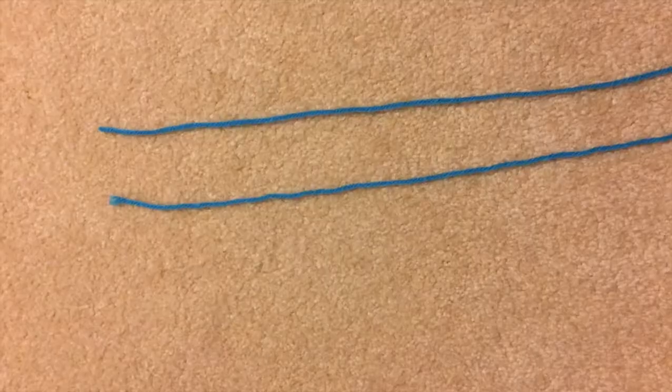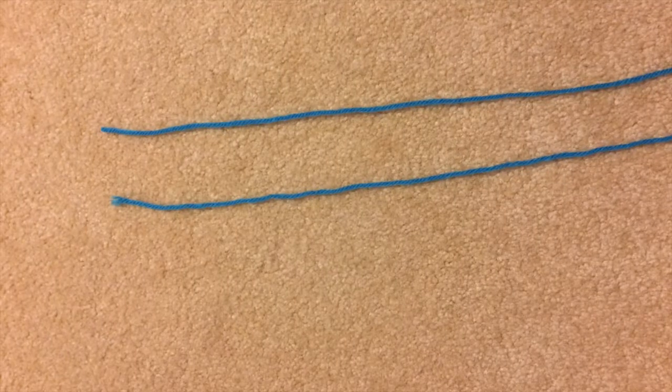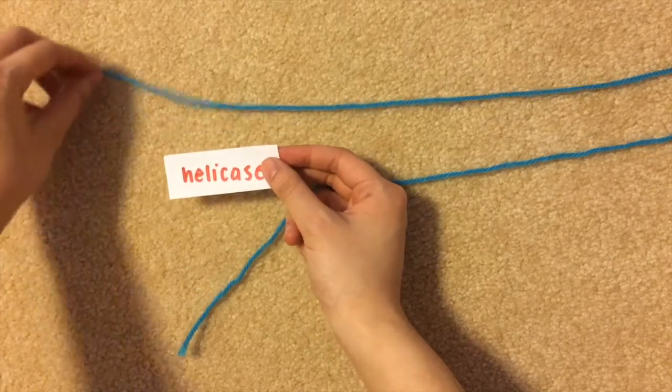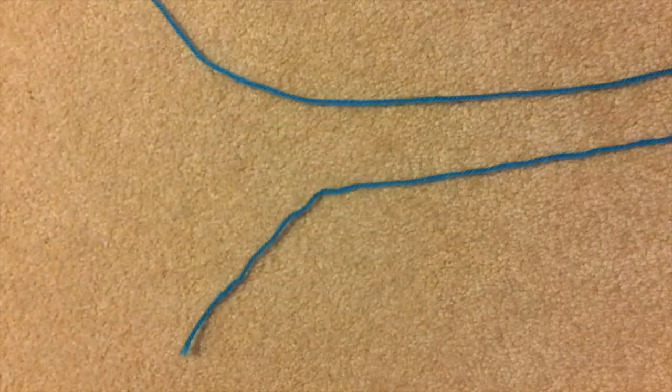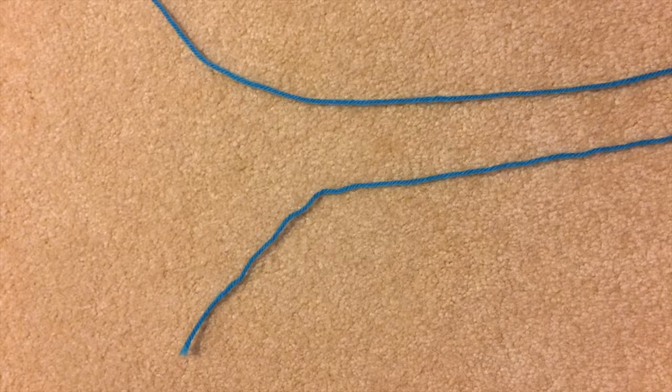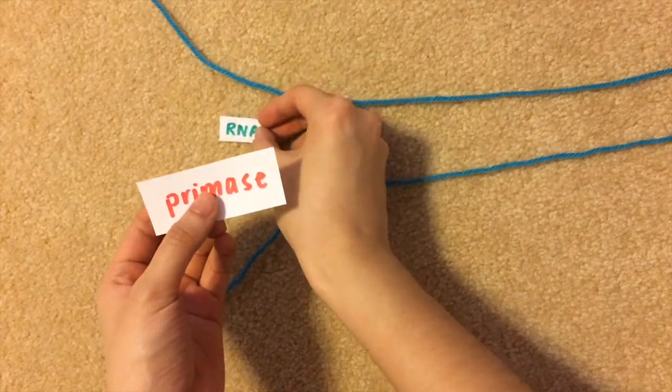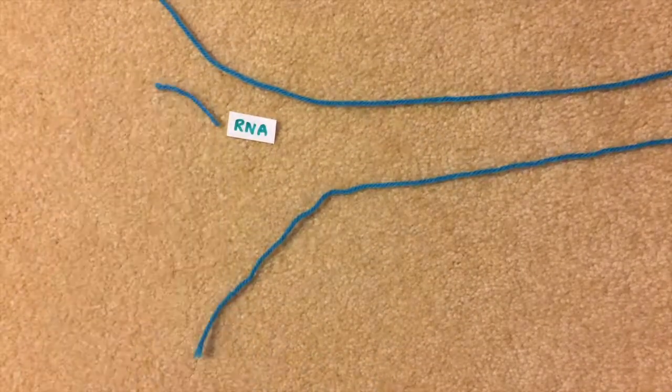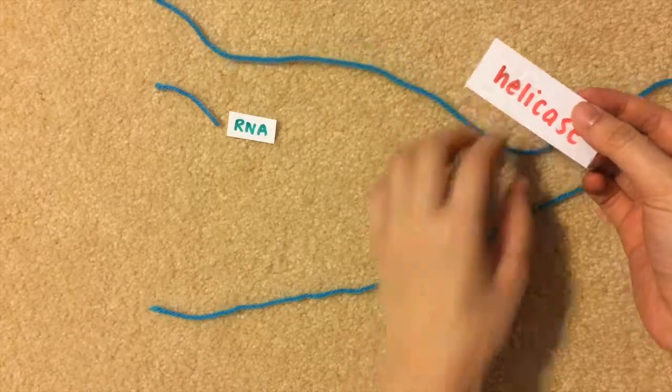The reason why the lagging strand is slower than the leading one is because the DNA polymerase can only work starting where the DNA has been unzipped by helicase. So try to visualize this process. Helicase opens up the DNA, primase adds an RNA primer to initiate replication, and DNA polymerase adds new material going away from the replication fork.